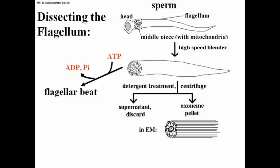The axoneme is the inner microtubular component of a flagellum or cilium. You can resuspend it and examine it in the electron microscope. When you add ATP, it is hydrolyzed, and the free energy enables the axoneme to beat. Without the membrane, that beat is a little jerky and not quite as smooth as in the intact flagellum, but it definitely whips around.